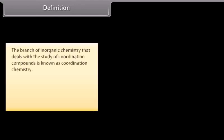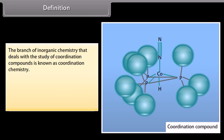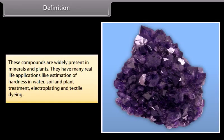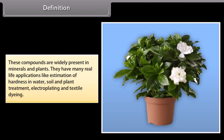Definition. The branch of inorganic chemistry that deals with the study of coordination compounds is known as coordination chemistry. A coordination compound contains a central metal atom which is surrounded by a suitable number of neutral molecules and usually retains its identity in solutions as well as in solid state. These compounds are widely present in minerals and plants and have many real life applications like estimation of hardness in water, soil and plant treatment, electroplating and textile dyeing.